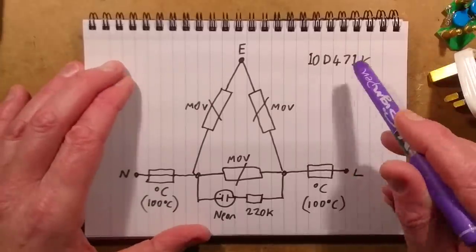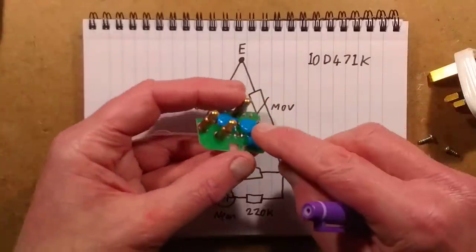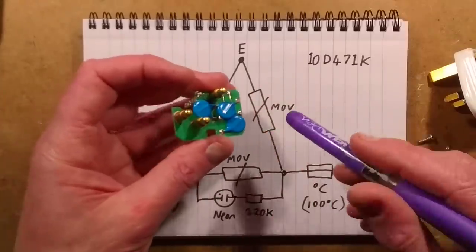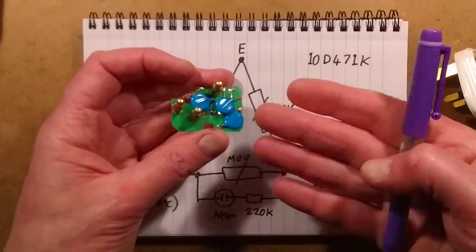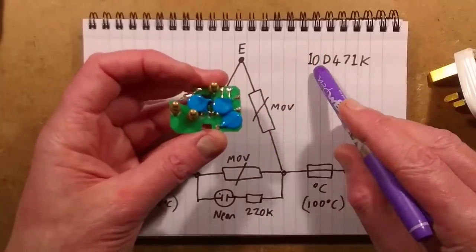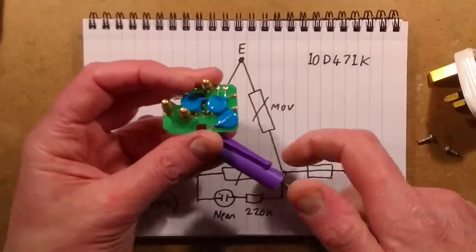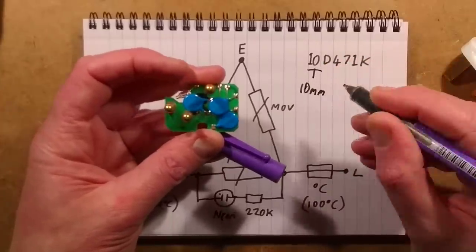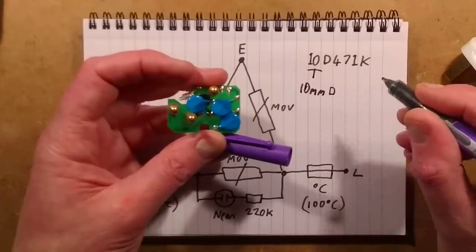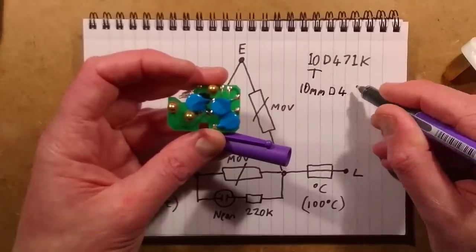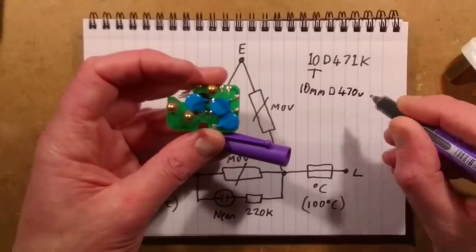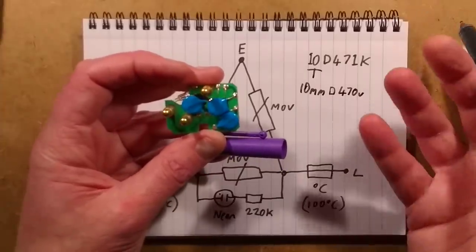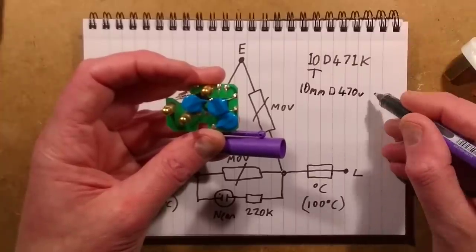And the metal oxide varistors, they are special resistors that have a high resistance up to a certain voltage. And as soon as you exceed that voltage, then they start conducting. And it's usually rated on the voltage at which they'll be conducting a certain amount of current. So these ones are labeled 10D471K. The 10 means 10 millimeters. That's the diameter. The D, I haven't a clue. I didn't even check that up. 471 is 47 and 10, 470 volts. That's the point, that's the voltage at which they'll be passing a certain amount of current. And as the voltage increases above that, the current will increase. And then a K.